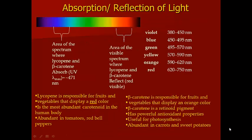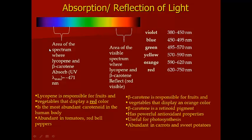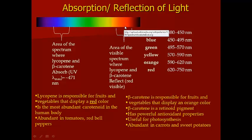The double bonds in lycopene give it its absorption properties. Lycopene is responsible for fruits and vegetables that display a red color, and the reason for that is that they reflect red in the visible spectrum. Interestingly, they absorb in the blue region. Lycopene in particular has a lambda max of 471, which is in the blue region. The area where they reflect is between 620 and 750 nm, which is the red-orange region.